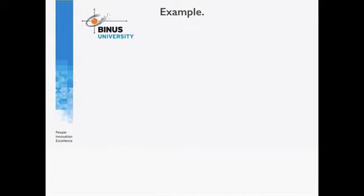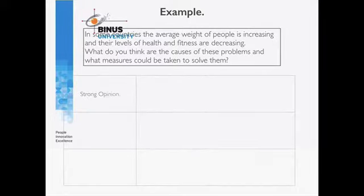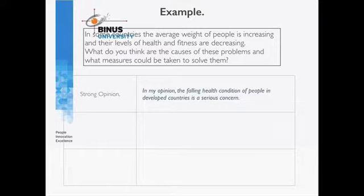Let's look at an example in terms of a real IELTS question. In some countries, the average weight of people is increasing and their levels of health and fitness are decreasing. What do you think are the causes of these problems and what measures could be taken to solve them? The strong opinion might be like this: In my opinion, the falling health condition of people in developed countries is a serious concern.